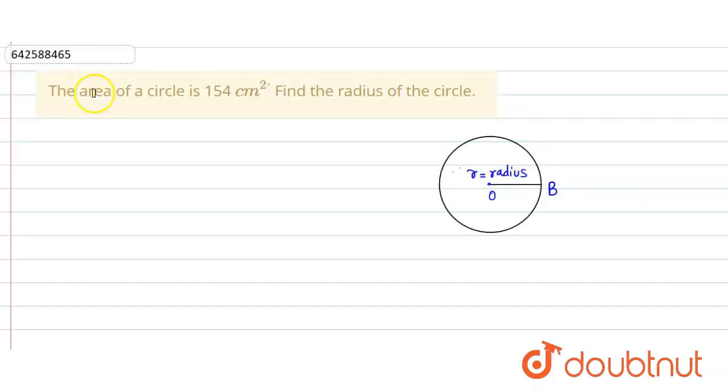In the given question, the area of a circle is 154 cm square. Then we have to find the radius of this circle.